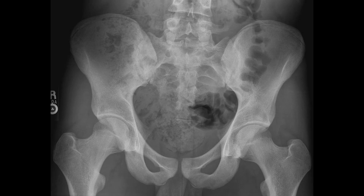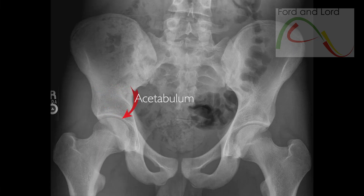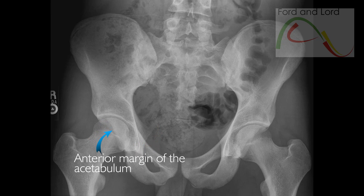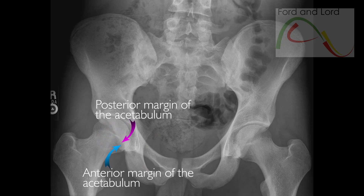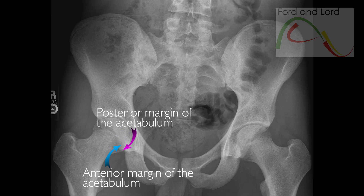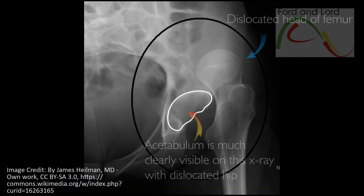Some parts of the acetabulum that were discussed in the last video can actually be seen on plain x-rays. This whole semicircular structure is the acetabulum, and these are the anterior and posterior margins of the acetabulum. Remember, the acetabulum is a cup-shaped three-dimensional structure, but the structures are superimposed on plain x-rays.